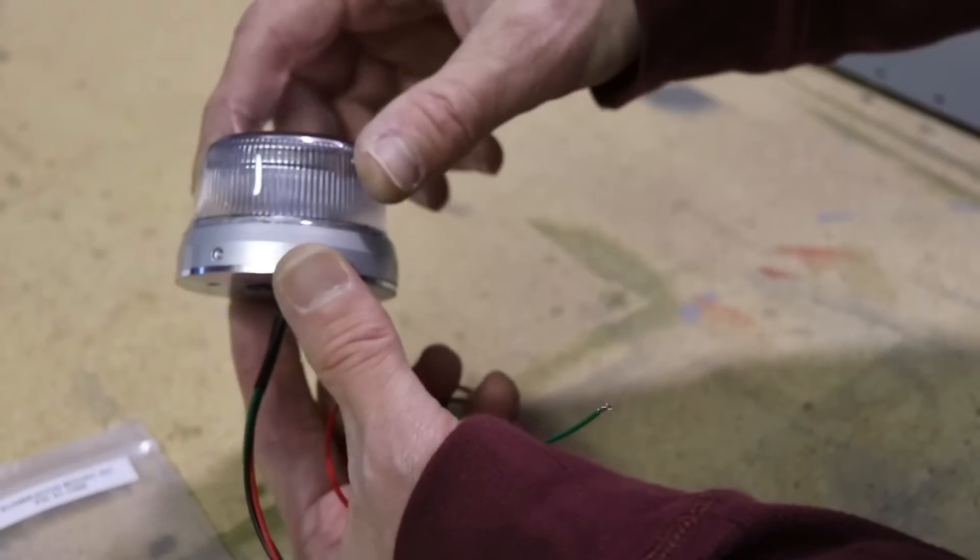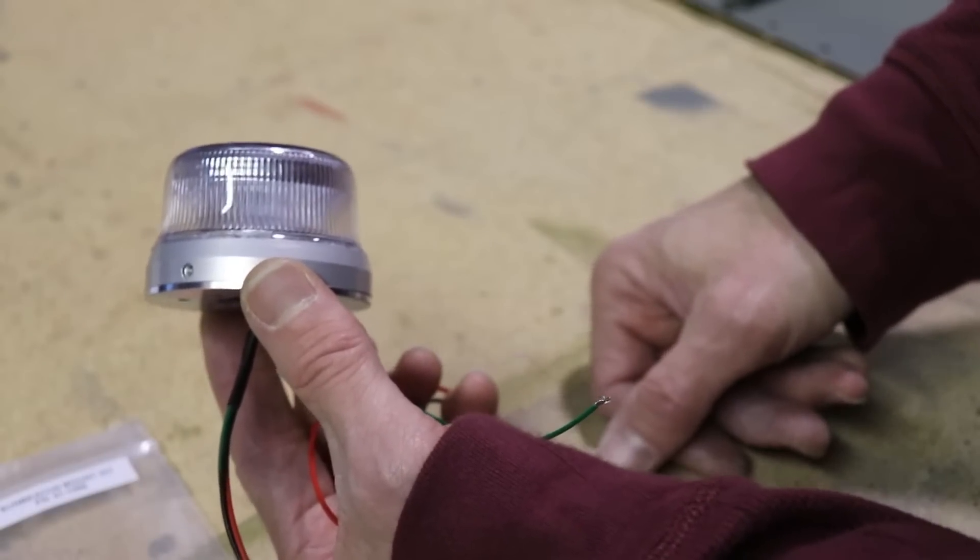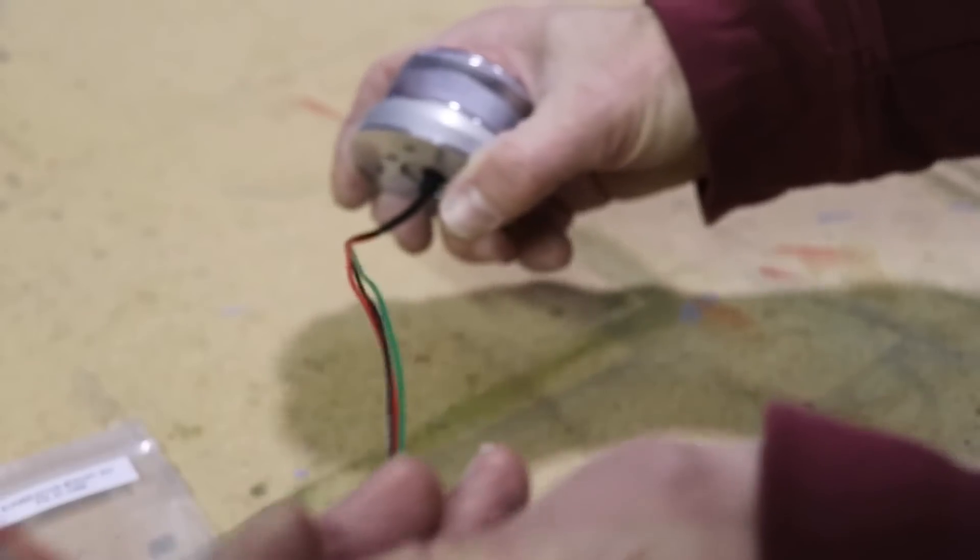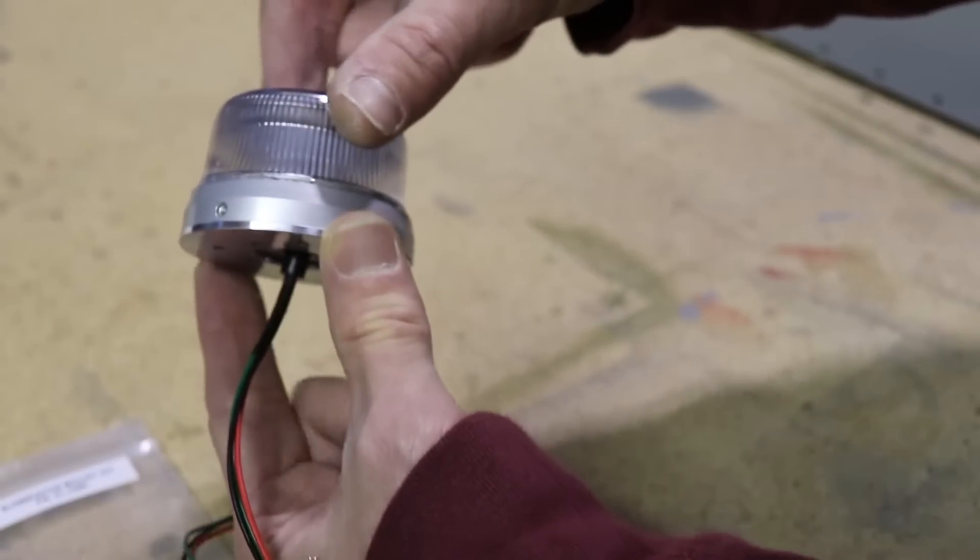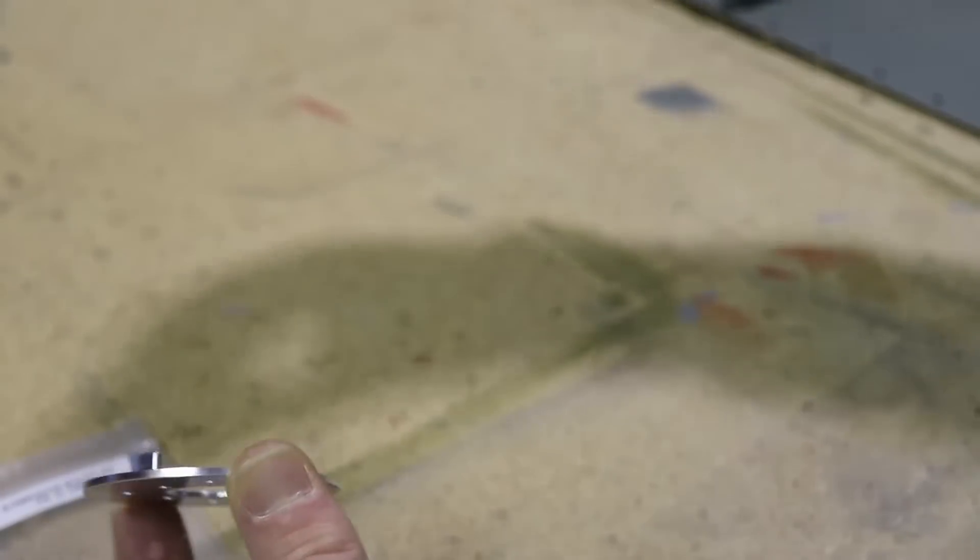You put that set screw in there to lock it in place and now your beacon is installed. It's really cool. I ordered this plate because I thought this would just be easier. If I ever need to change this beacon for whatever reason, all I have to do is go into the access hatch on the bottom of the plane and disconnect the wire, and then from the outside of the plane you loosen that set screw, give it a slight little turn, and it comes right out like that. Isn't that neat?